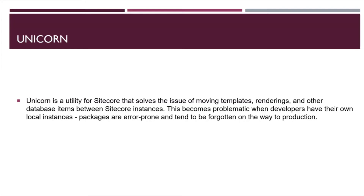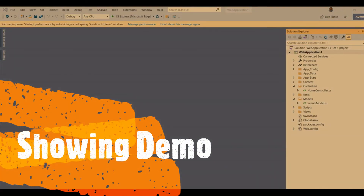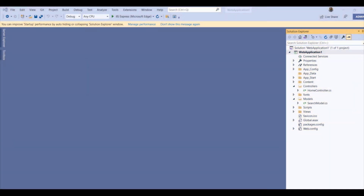You can put the package and you can easily roll back the package as well. In a Sitecore instance, you will need to provide the Unicorn.aspx. In there, you can serialize, sync, or re-serialize as well. Let me show you a demo so you will get a firm grip on how to install Unicorn in a Sitecore 9 solution.